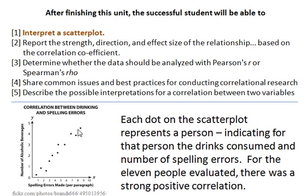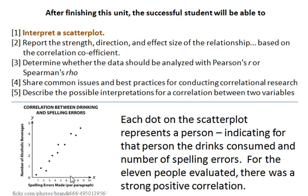By looking at the scatter plot we can see who consumed the most alcoholic beverages — this person right here, who also interestingly enough made the most spelling errors. And who consumed the least amount of alcohol? This person here, who made fewer errors. A scatter plot also allows us to make predictions. By looking at this we can see that those people who drink the most also tend to make the most errors.